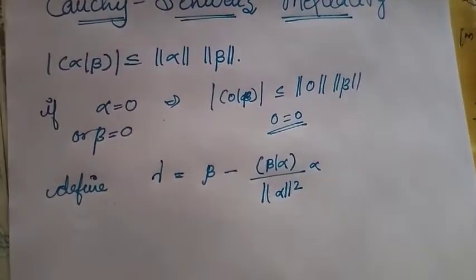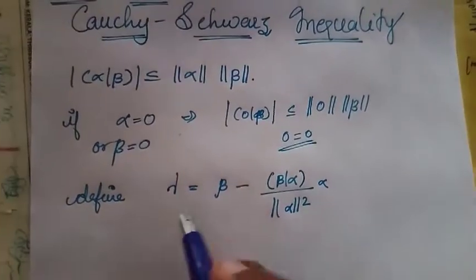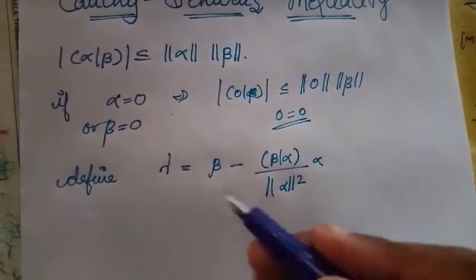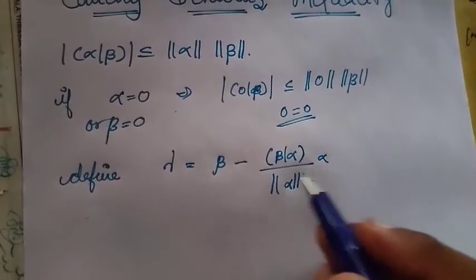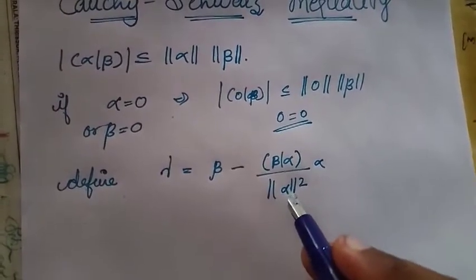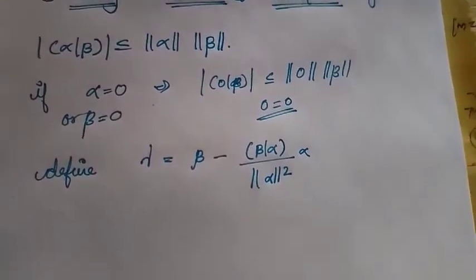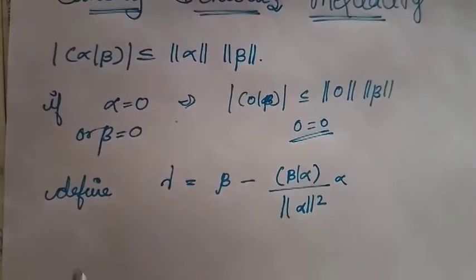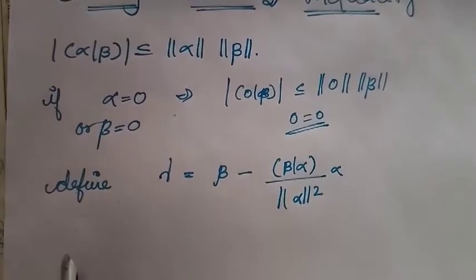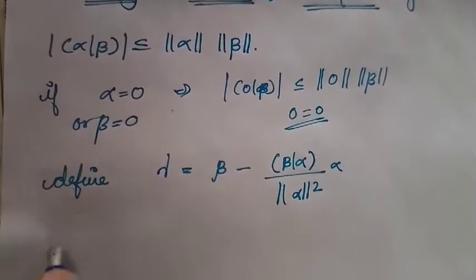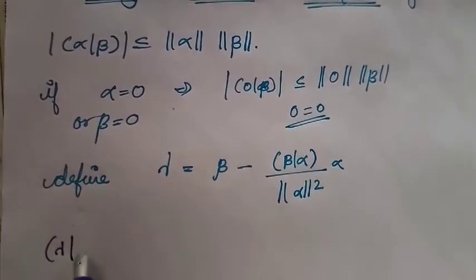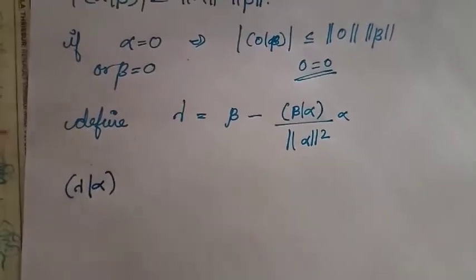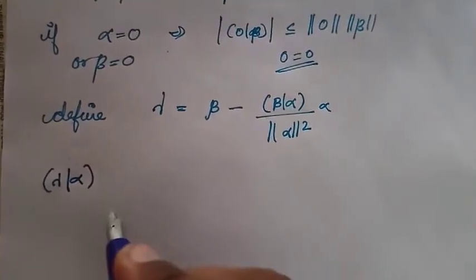Here, I have defined gamma equals beta minus the inner product of beta with alpha divided by norm alpha squared, all multiplied by alpha. Now we are going to find the inner product of gamma with alpha.